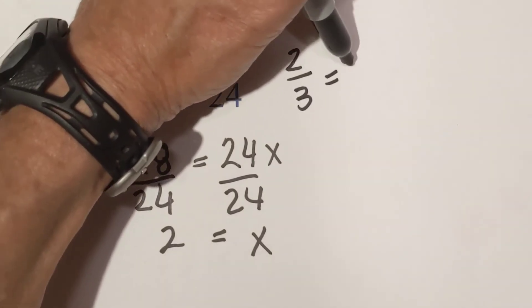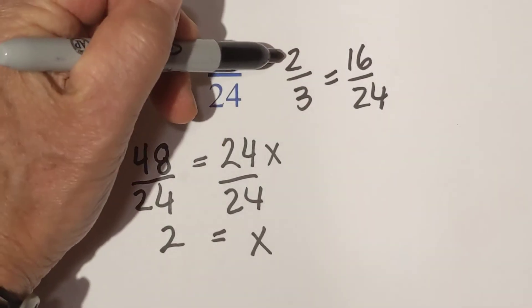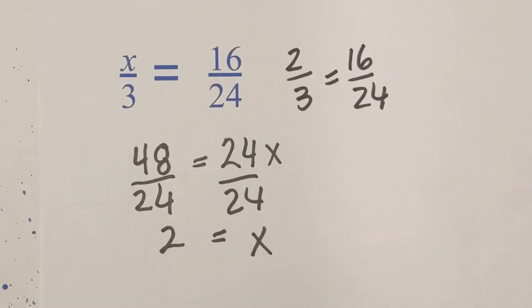Let's fill this in. Two thirds is equal to 16 twenty-fourths. Okay, 2 goes into 16, 8 times, and 8 times 3 is 24.